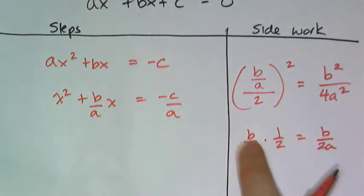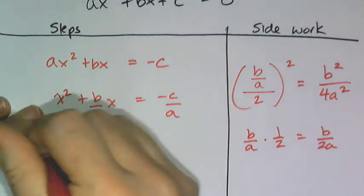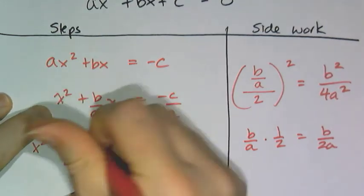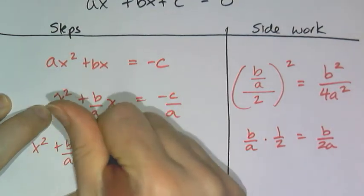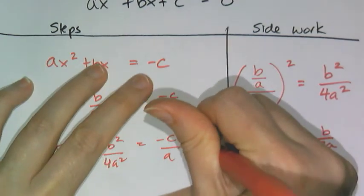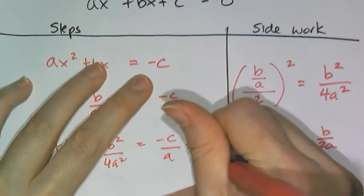All right. So that's what I have to add to both sides. So I'm going to have x squared plus b over ax plus b squared over 4a squared equals negative c over a plus b squared over 4a squared.